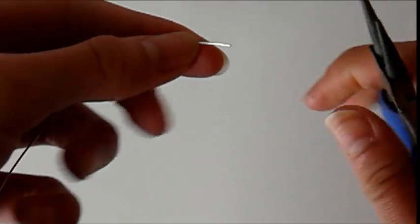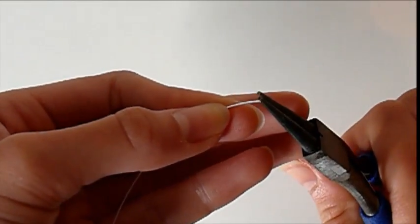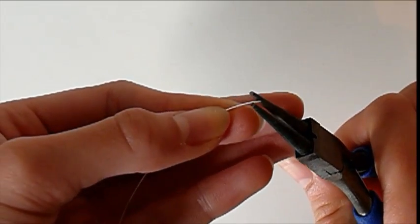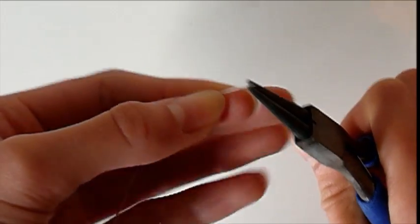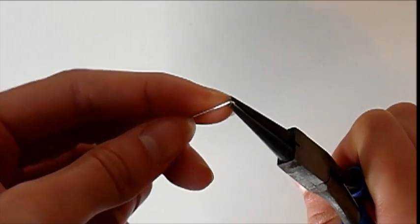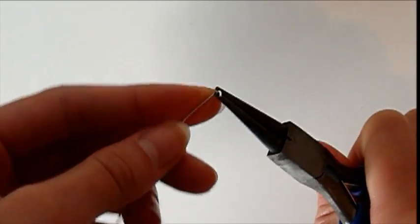Use your round nose pliers to form a small circle. Place the pliers at the very end of your wire.